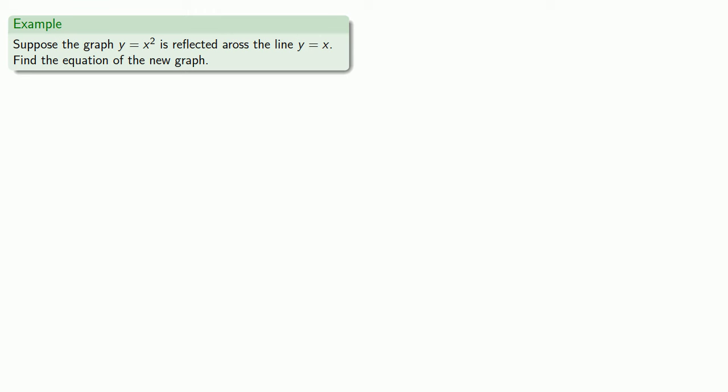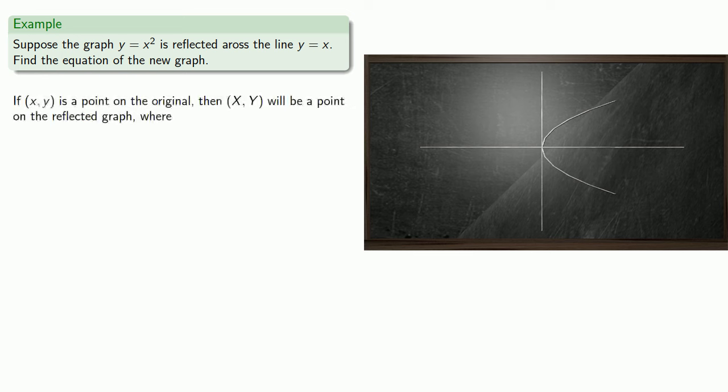So suppose the graph of y equals x squared is reflected across the line y equals x. Let's find the equation of the new graph. So if (x,y) is a point on the original, then capital X, capital Y will be a point on the reflected graph where capital X is y and capital Y is x. So from our equation y equals x squared, equals means replaceable, we'll replace Y with capital X, X with capital Y, and get our new equation. And so our reflected graph has the equation x equals y squared.